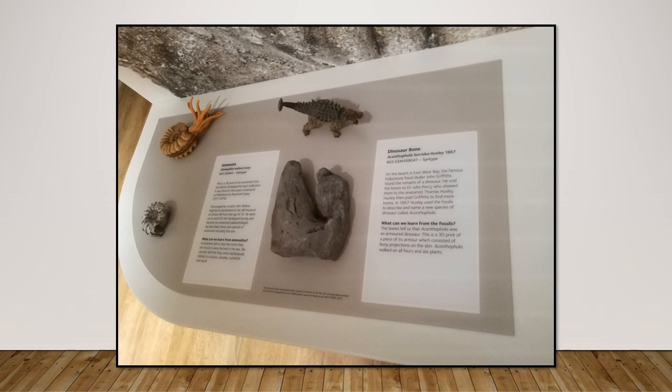Here is a photo of a hands-on display at Folkestone Museum acting as a tribute to Raymond Casey and John Griffiths. On the left is a 3D print of Otohoplites waltoni — the ammonite described in honour of curator John Walton — with the originals in the British Geological Survey collection, though you can find 3D scans online to download and print. On the right is a 3D print of part of the armour of Acanthopholis horridus, also from the British Geological Survey collection, collected by John Griffiths.